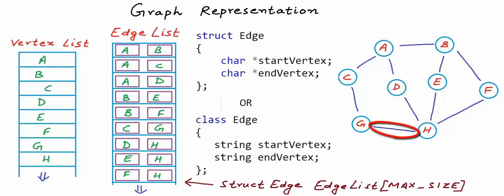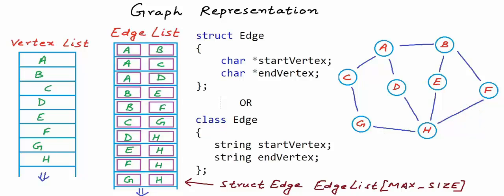Actually there is one more — we also have G-H, so we have ten edges in total, not nine. Now, because this is an undirected graph, saying there is an edge from F to H also means there is an edge from H to F. There is no need to have another entry as H-F — we would unnecessarily be using extra memory. If this was a directed graph, F-H and H-F would have meant two different connections, and which is the start vertex and which is the end vertex would have mattered.